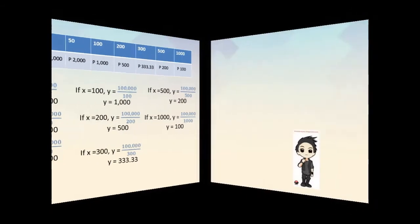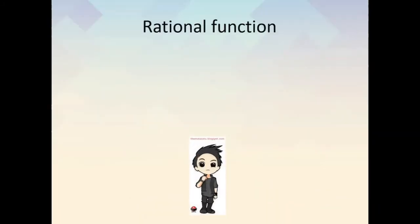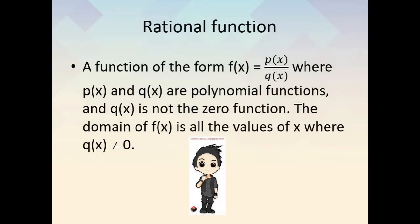Rational function: A function of the form f of x is equal to p of x over q of x, where p of x and q of x are polynomial functions and q of x is not the zero function. The domain of f of x is all the values of x where q of x is not equal to zero.